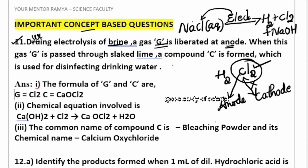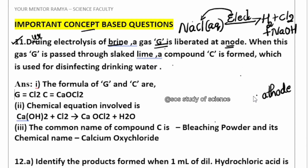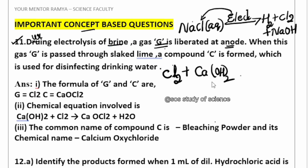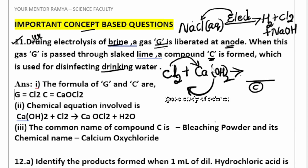Further, when this chlorine gas is passed to slaked lime — the formula of slaked lime is calcium hydroxide Ca(OH)₂ — we get one important product, compound C. This compound C is also used in disinfecting drinking water. Whenever chlorine gas is passed to dry slaked lime, we get calcium oxychloride, that is bleaching powder. So compound C is bleaching powder, and water is also formed alongside.